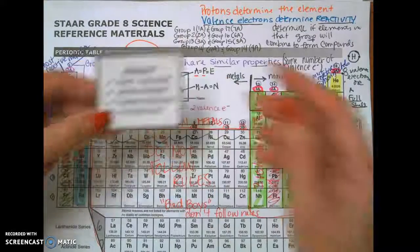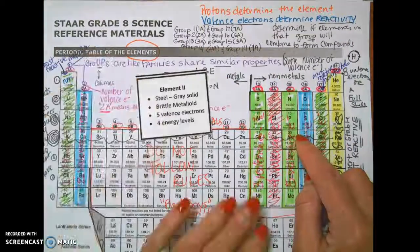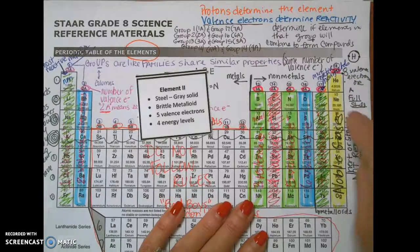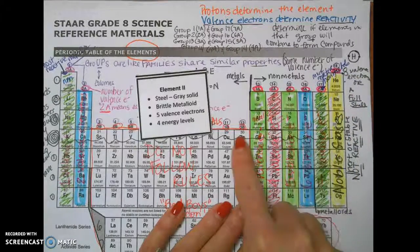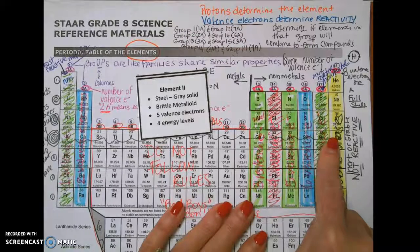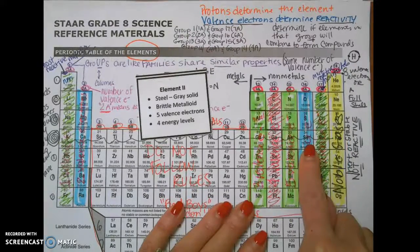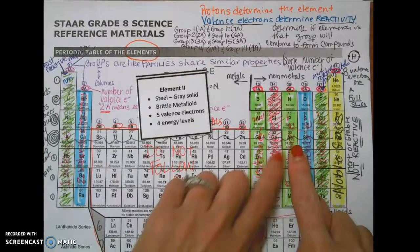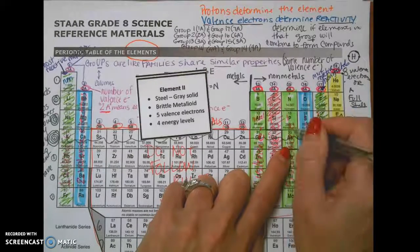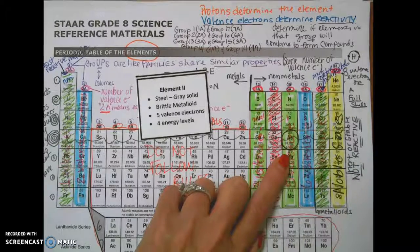Four energy levels means we're in period 4 — that's row 1, 2, 3, 4. And five valence electrons means group 5A. So our answer is right here — element 2 would be arsenic.